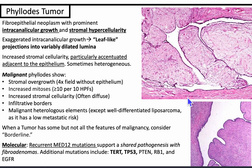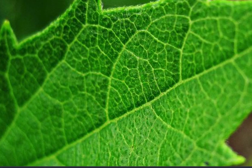Phylloides tumor is more worrisome than a fibroadenoma. Phylloides tumors can be broken down into three grades: benign, borderline, and malignant. Generally speaking, phylloides tumor is a fibroepithelial biphasic neoplasm with prominent intracanalicular growth and stromal hypercellularity. Because of the exaggerated intracanalicular growth, it looks leaf-like — you can imagine the veins as the exaggerated intracanalicular growth.